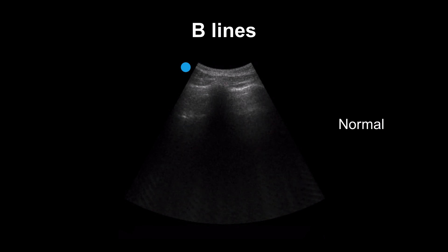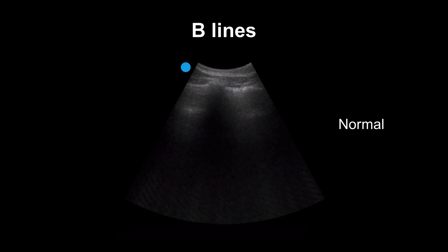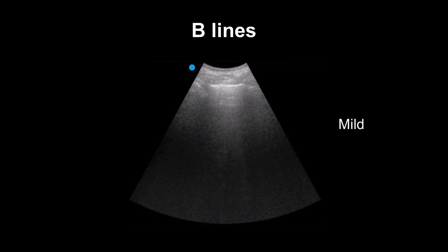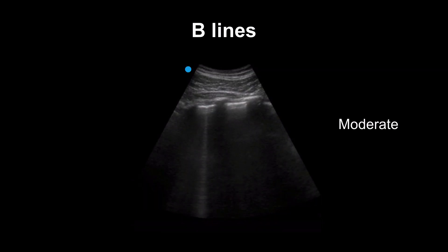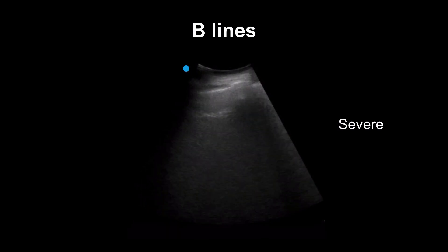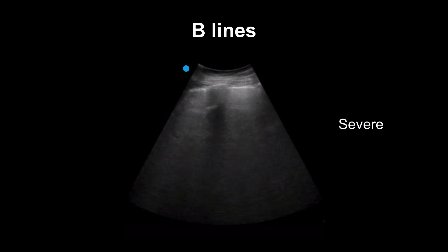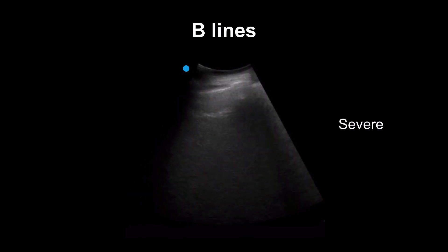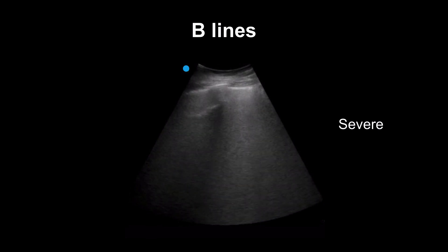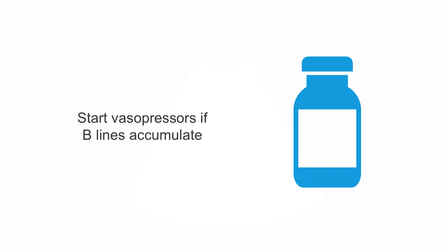Remember that B-lines represent a continuum of disease. You can see over time if you're increasing them by giving more IV fluid. A normal lung ultrasound profile, then mild B-lines, then moderate B-lines, then a severe number of B-lines — by understanding this continuum we can guide our fluid strategy. We can monitor B-line development over time using serial lung ultrasounds. B-lines will appear before patients are in overt pulmonary edema, allowing us to start vasopressors if B-lines are accumulating and the patient is persistently unstable.